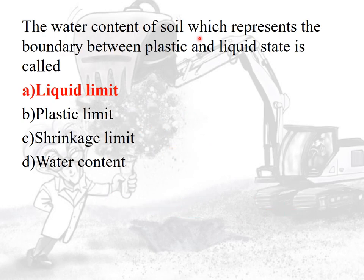The water content of the soil which represents the boundary between the plastic state and the liquid state is called liquid limit. If the boundary is between the plastic and semi-solid state, the answer is plastic limit. If the boundary is between the semi-solid and solid state, the answer is shrinkage limit.